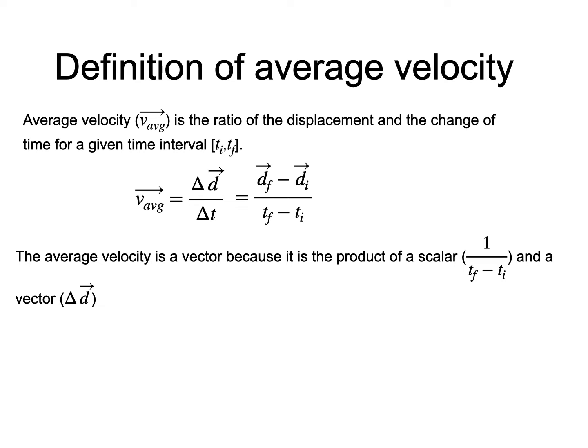Since the scalar 1 over delta t is always positive because the final time is always larger than the initial time, the average velocity is in the same direction as the displacement.